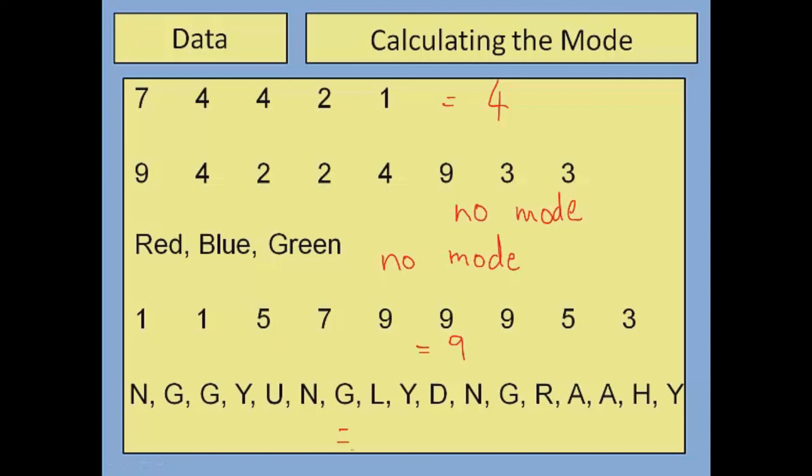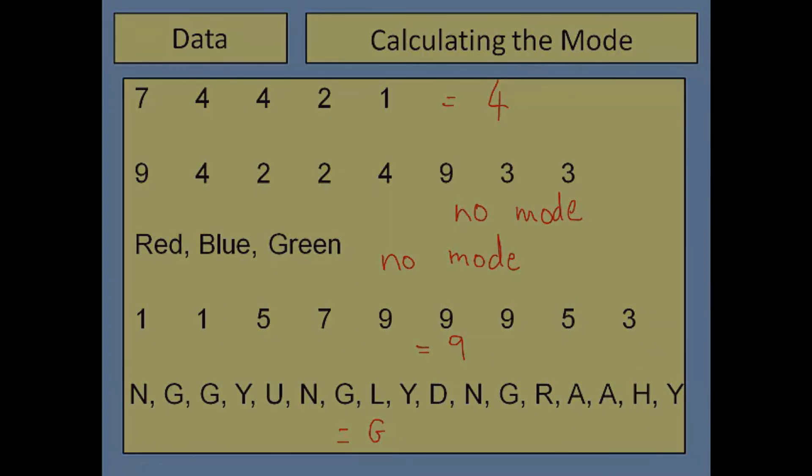And for the final one, again, remembering that it doesn't have to be a number—it could be a letter. Like in this series of letters, G actually comes up four times, which is more than any other letter. So G would be the mode.